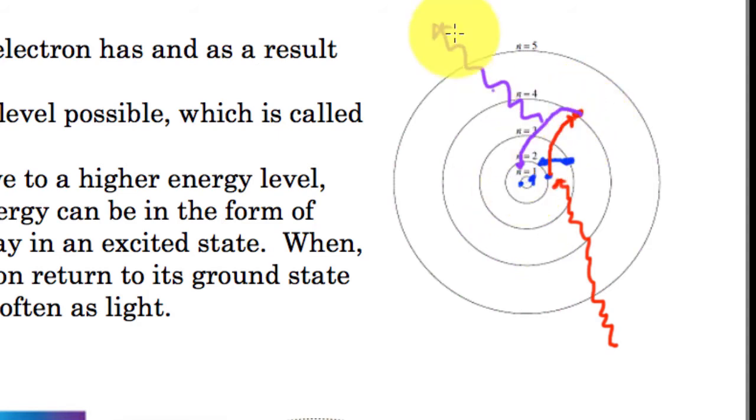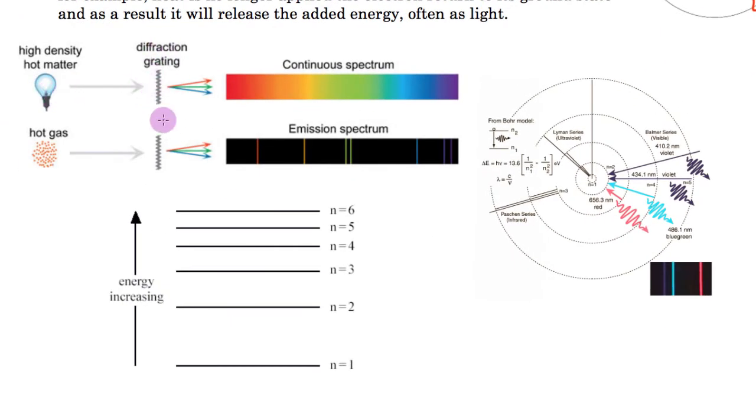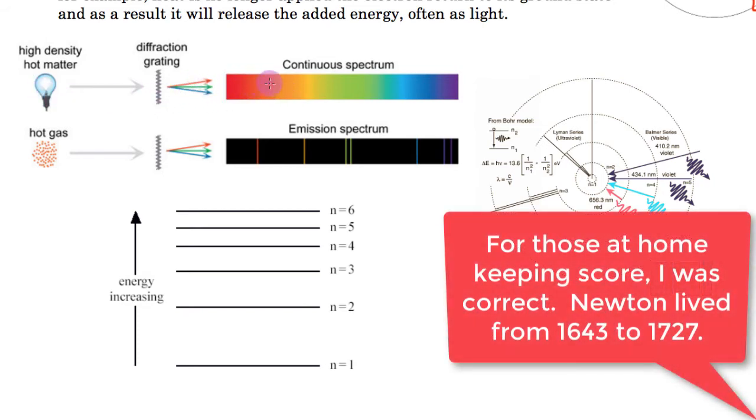So what Bohr did to prove this idea, as crazy as it is, is he looked at light. Now hopefully you know that if you take a white light and you shine it and you put it through a diffraction grating or a prism - this is what Isaac Newton did way back in the 1600s - he took this light and broke it up into the continuous spectrum, the rainbow effect.